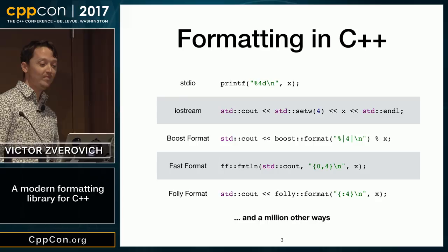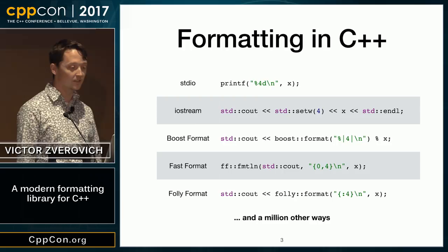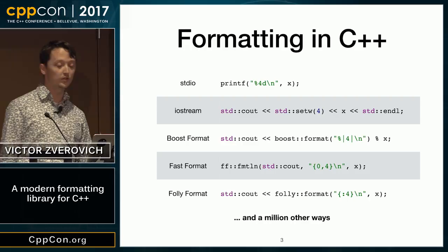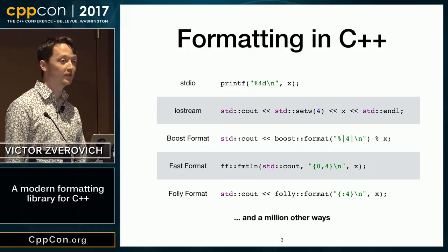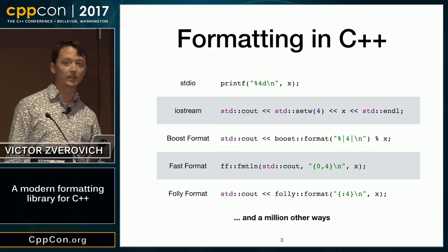Here is a brief high-level overview of what formatting facilities we have in C++. Obviously we have two standard solutions: STD.io and IOStreams. And we have a bunch of formatting libraries, like Boost Format and Fast Format — arguably two most well-known libraries. I also included Folly Format, which is not a separate library but a part of Facebook Folly which provides formatting facilities. I include it here because it's very relevant to what I'll be talking about. And there are millions of other ways of doing formatting.